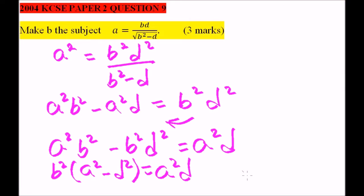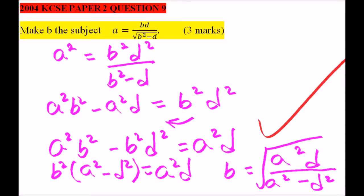So get the square root and divide both sides by a squared d squared and get the square root. So b is equals to a squared multiplied by d divided by a squared minus d squared and it is under square root sign. So that is how you work out that and you earn yourself 3 marks.